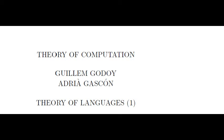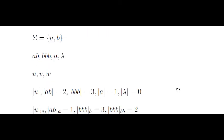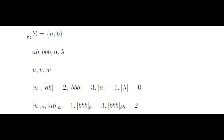In this chapter, we'll introduce the notions and basic notations about theory of languages that we'll use in this course. An alphabet is a finite set whose elements are called symbols. We'll usually denote it by uppercase sigma.